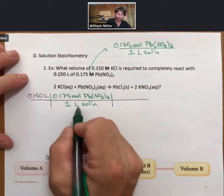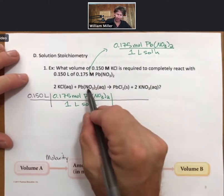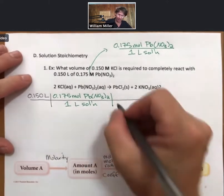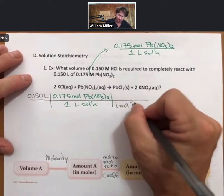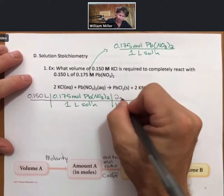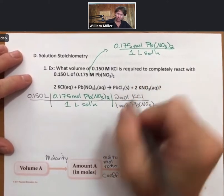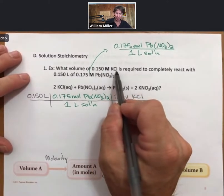That way my units, my liters cancel. I know what I have moles of, and I know that based on the balanced reaction, I need one mole of lead-to-nitrate for every 2 moles of potassium chloride. I know potassium chloride because that's what I'm being asked about.